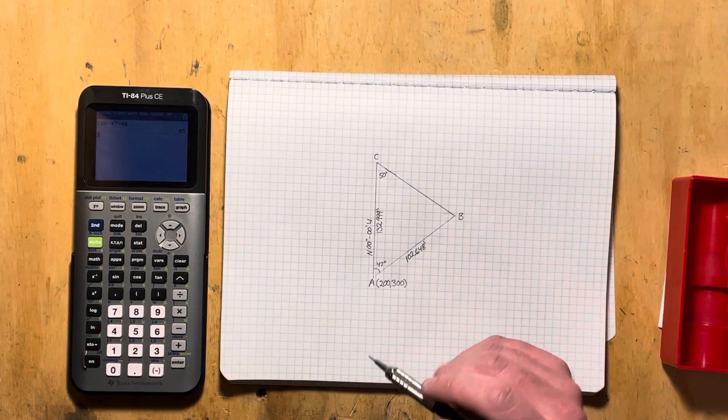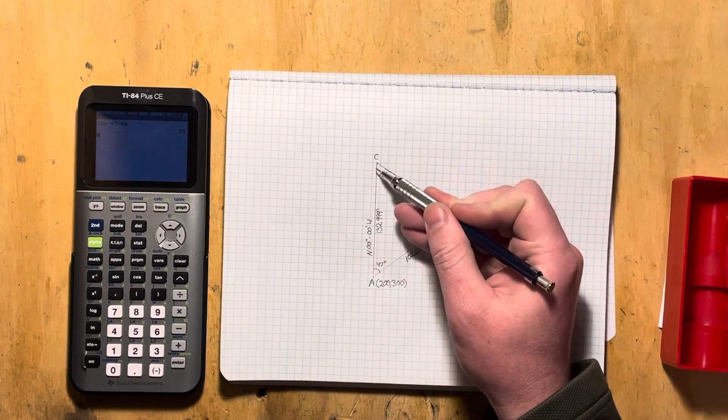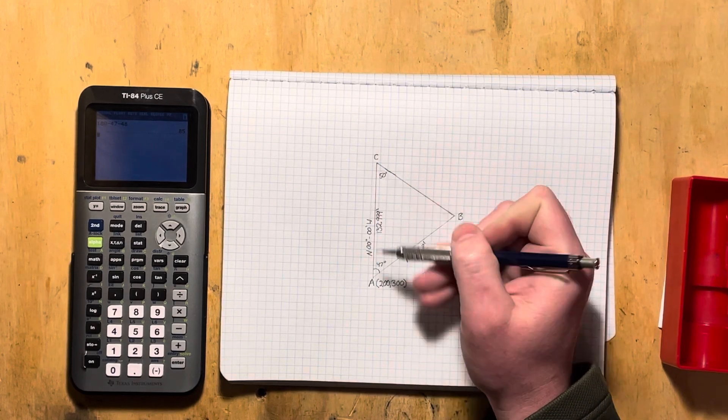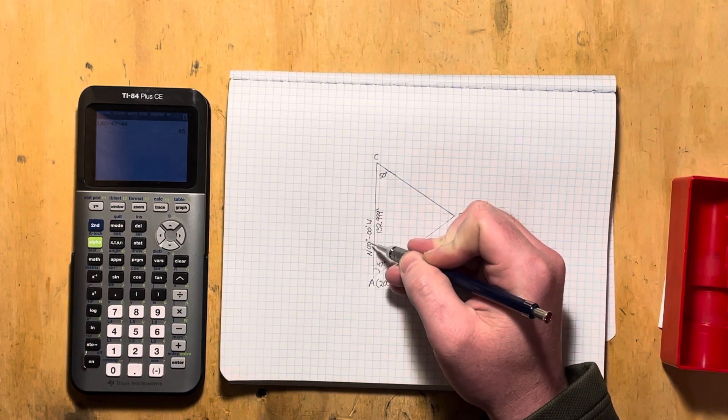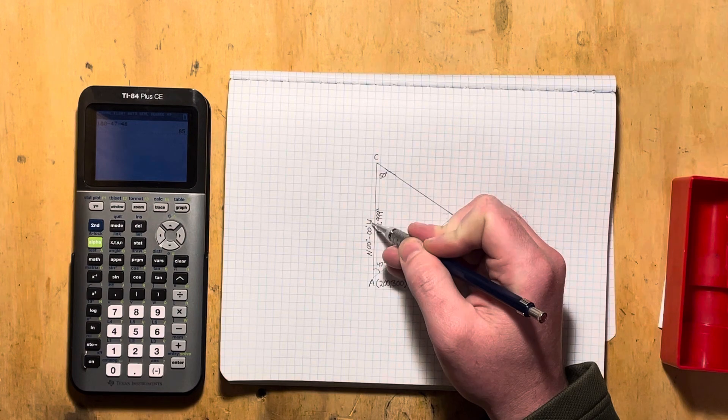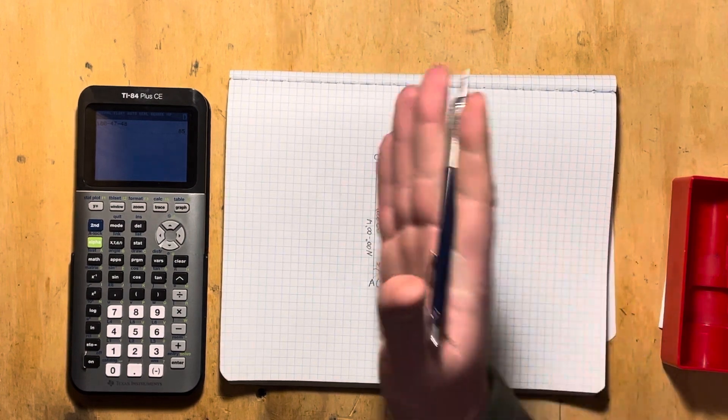The given information that we have is that we know the line AC is due north. It is a straight north-south line. We see that here, north, zero degrees, zero minutes west. So straight north-south line.